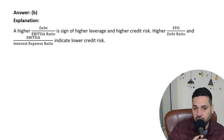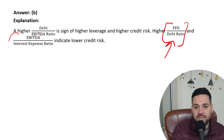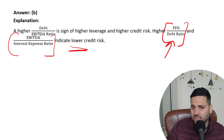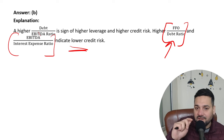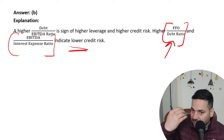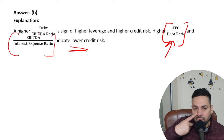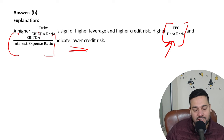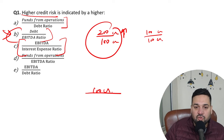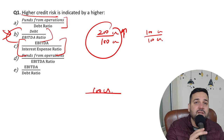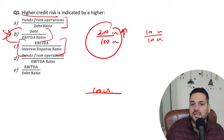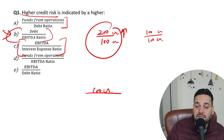B — debt-to-EBITDA ratio — is the correct answer. Please note that a higher funds-from-operations-to-debt ratio and a higher EBITDA-to-interest-expense ratio both indicate lower credit risk, meaning the business is in good condition. A higher debt-to-EBITDA ratio means business condition is not good and the possibility of default increases. Please remember that these kinds of questions — not exactly this one, but similar — will appear. A lot of students ask me to give 100–200 questions so the paper comes from those, but it's not like that.